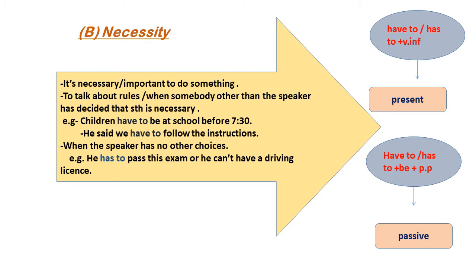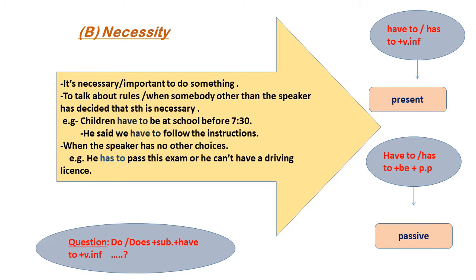When the speaker has no other choices, we use 'have to / has to' — for example, 'he has to pass this driving exam or he can't have a driving license.' In questions, we begin with 'do or does + subject + have to + infinitive.'